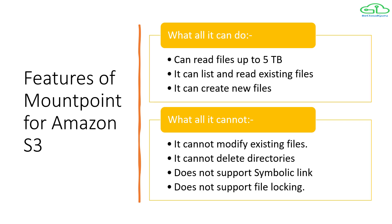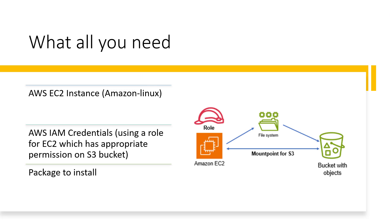These are the features you need to keep in mind before you decide whether you want to use it or not. Now, what do you need? You need an EC2 instance — basically an Amazon Linux-based instance, because Mount Point is only available for Linux-based operating systems as of now. You would require IAM credentials, basically a role which you will assign to your EC2 instance with appropriate S3 bucket permissions. You also need to install the Mount Point package for S3.